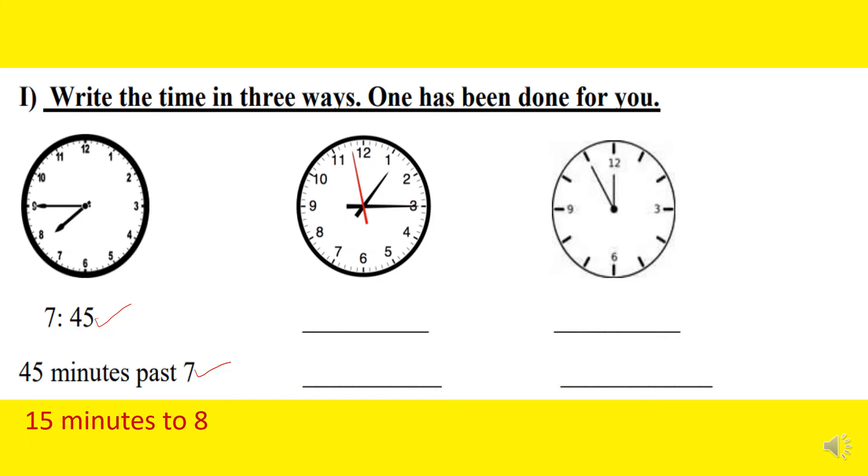Let's go for the next clock picture. First we have to write the time. Here the hour hand is between 1 and 2 but it is very near to 1, not closer to 2. And the minute hand points to 3, that means 15 minutes. So we can say the time as 1:15. How to read this time? We can say 15 minutes past 1.